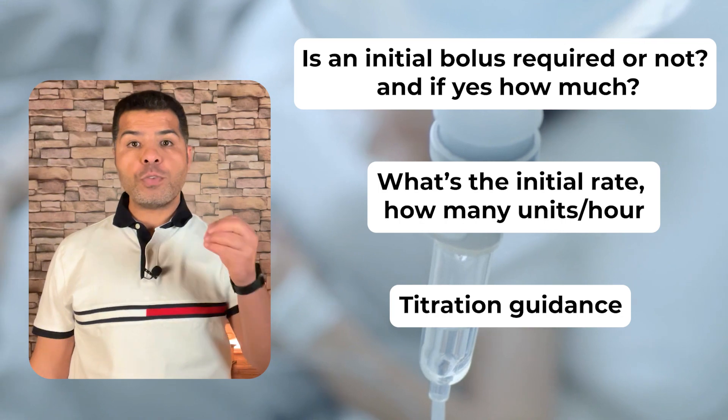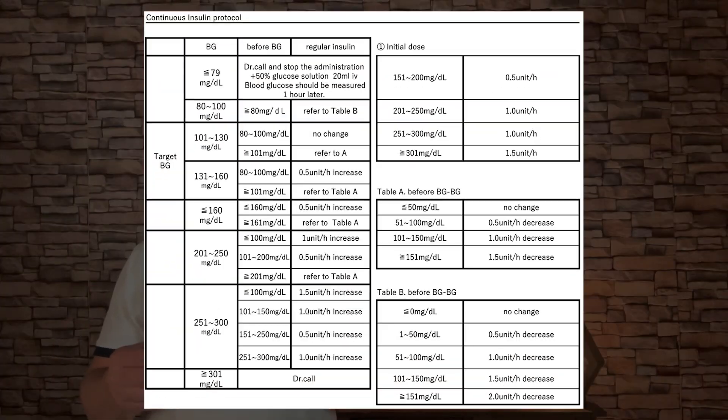If your hospital already has set protocols for insulin drips — which most hospitals do — all you need is to pick your protocol, which will have all this information. If there are no such protocols at your facility, one trick is to search online, as many institutions have their protocols publicly available to download. The drawback is that you have to manually enter it into your system since it's not approved by your facility, but it's not too hard to run an insulin drip.